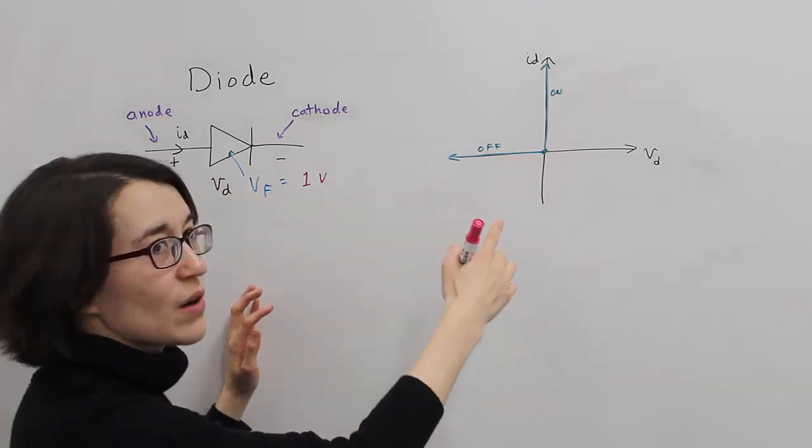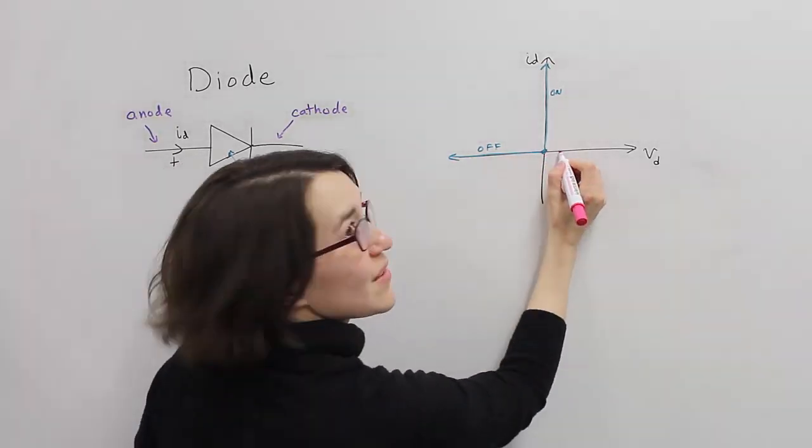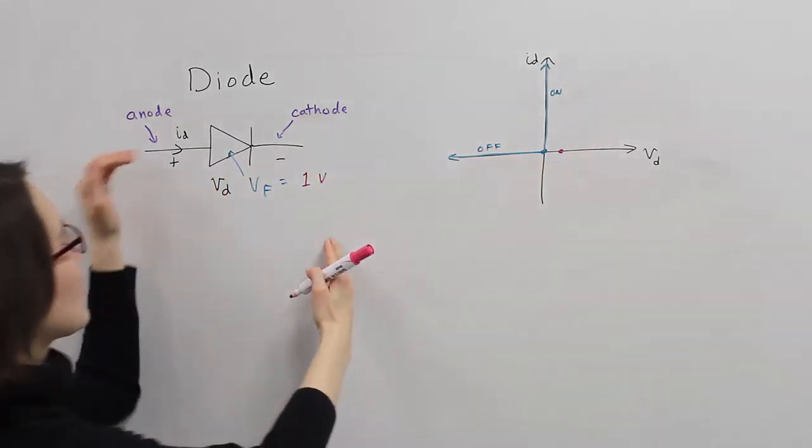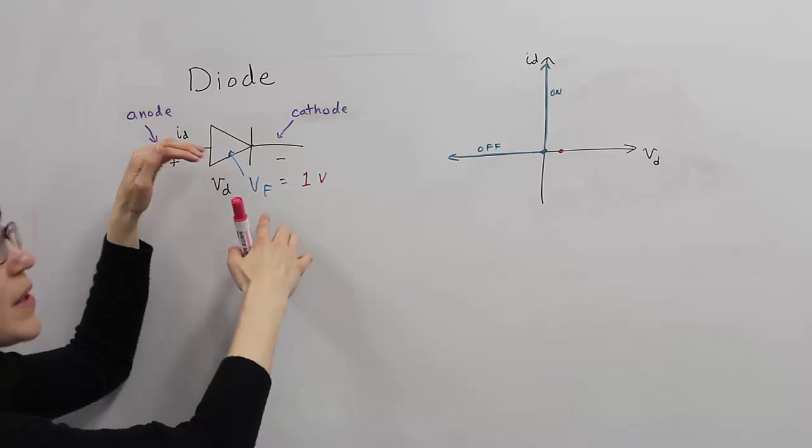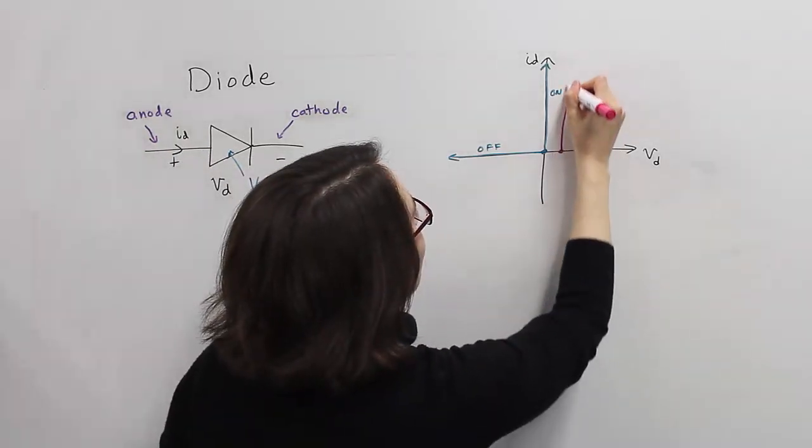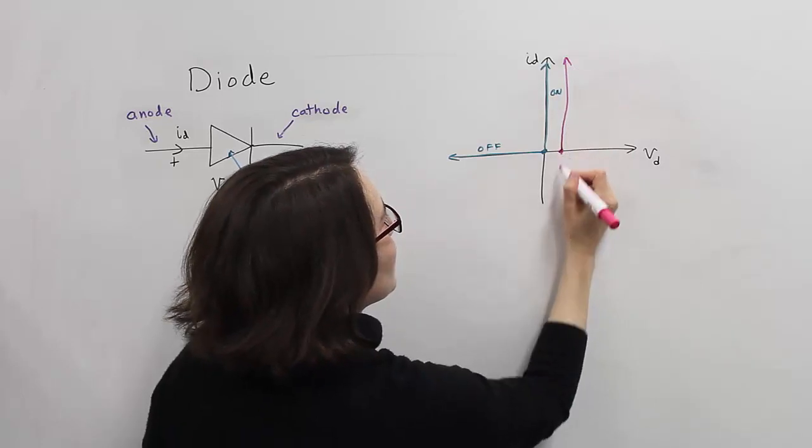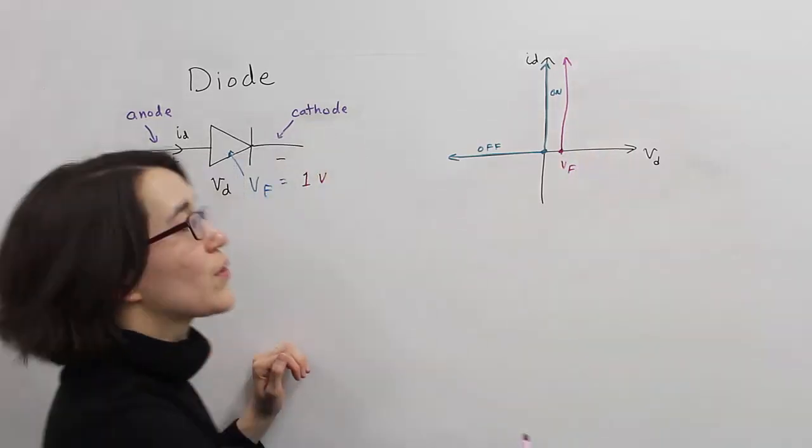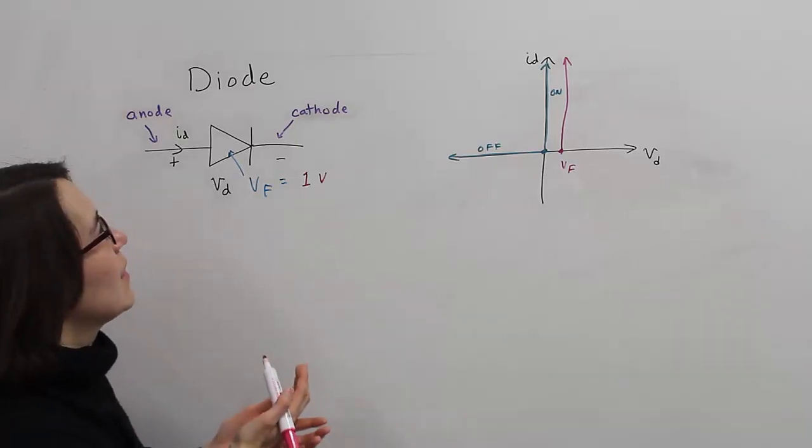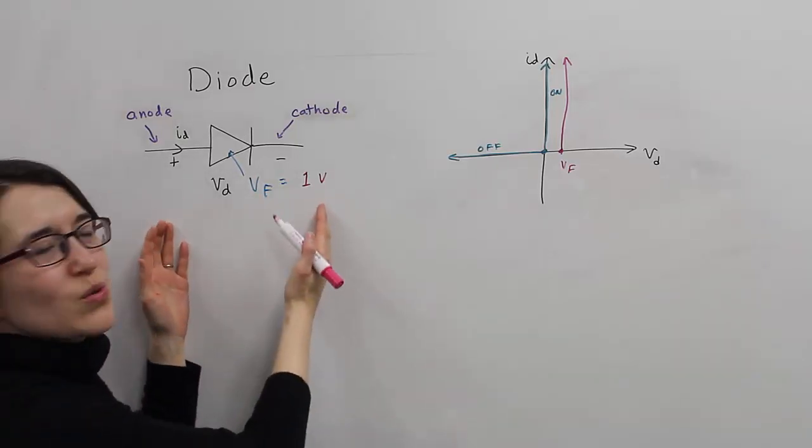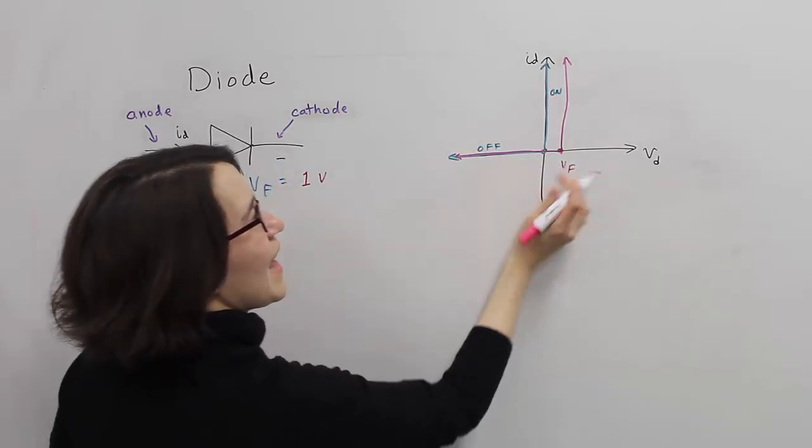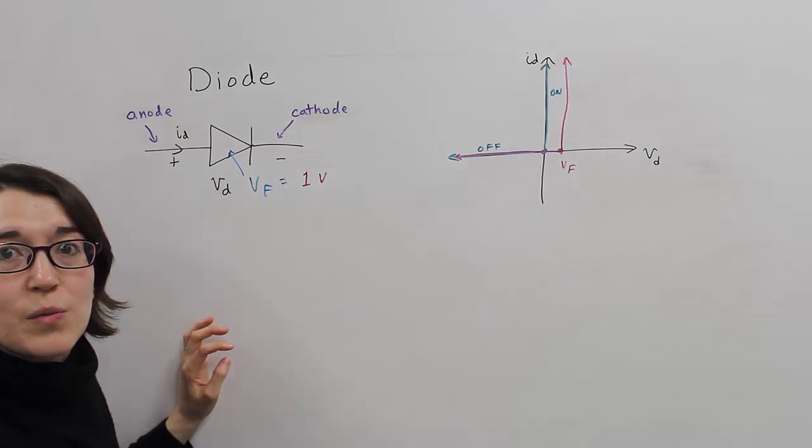When we represent that here on this graph, all this does is shift this point over a little bit. So now we have, when it's on, current flowing, there is a voltage drop here of about one volt. So now we can represent that here. This voltage will be VF, the forward voltage. And then when current is not flowing, it can block anywhere up to the one volt. So it's essentially represented here. And it shifts that over a little bit.